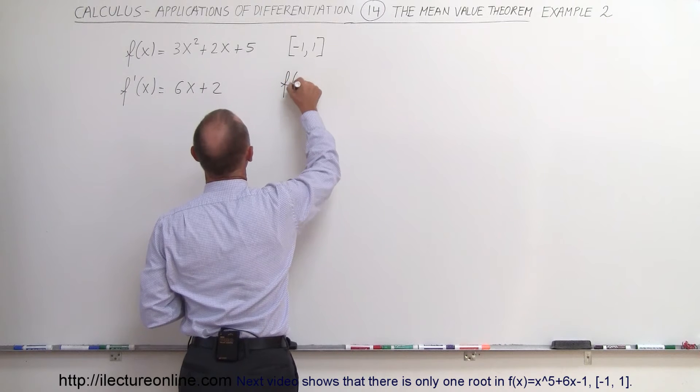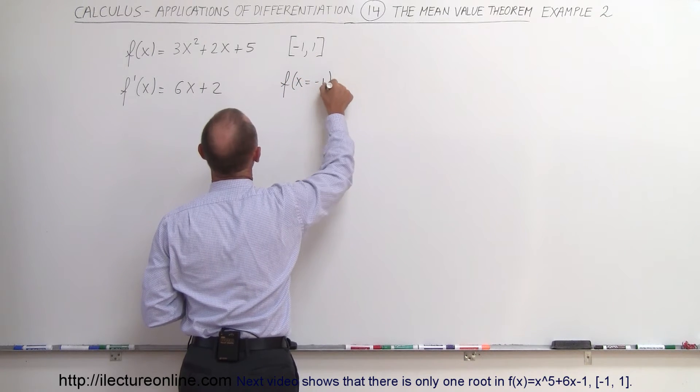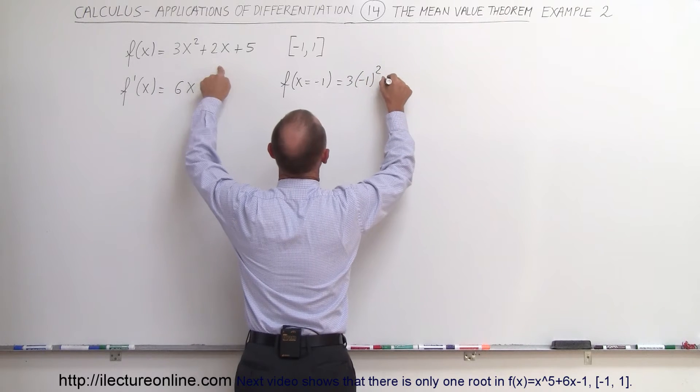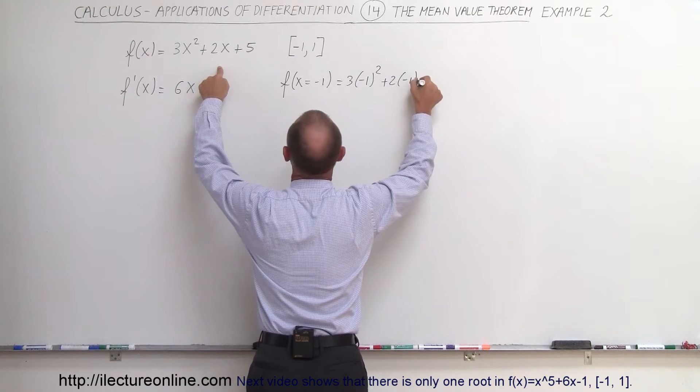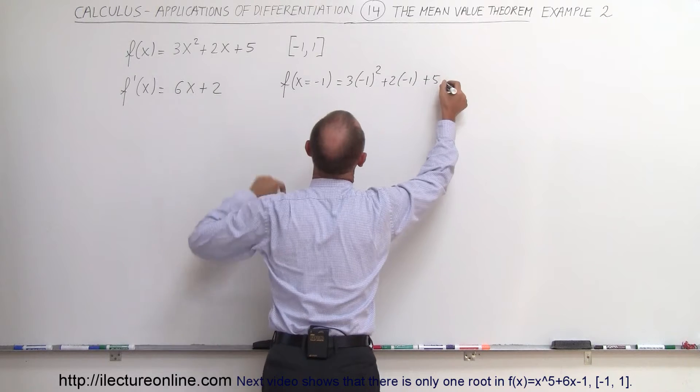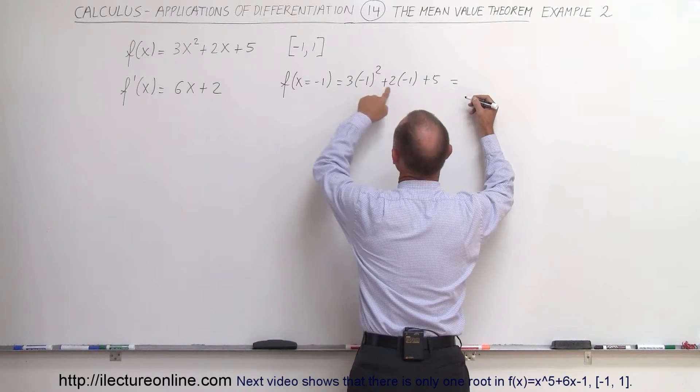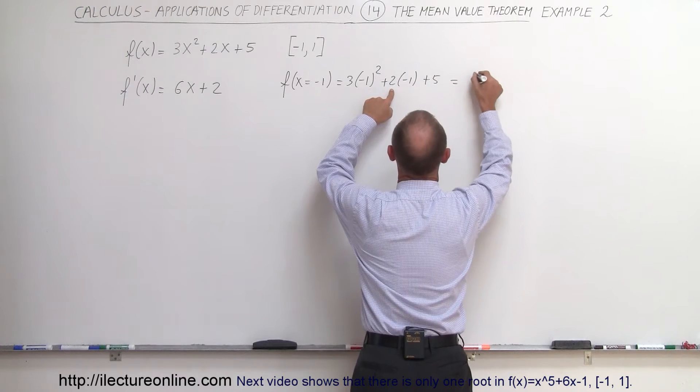So here we have f when x is equal to negative 1, that is equal to 3 times negative 1 squared plus 2 times negative 1 plus 5. This would be equal to—that would be 1 times 3 is 3 minus 2 is 1 plus 5 is 6.